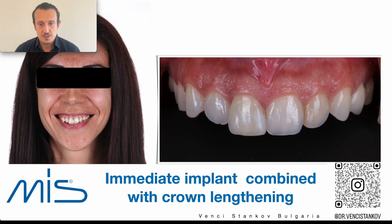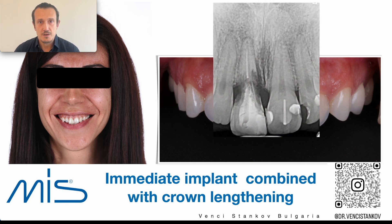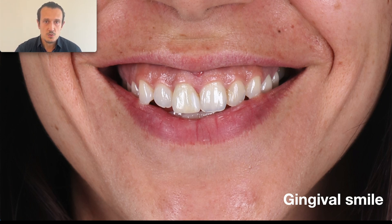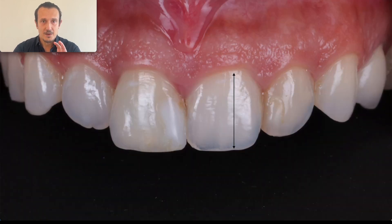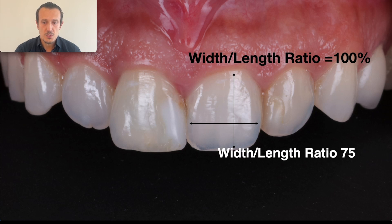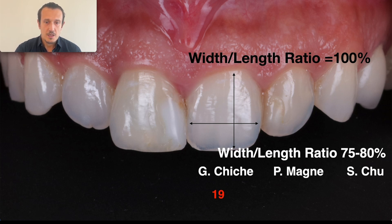We have a young patient who has a history of internal bleaching and something went wrong — she has a very severe external resorption and this is a tooth that I cannot save. The main complaints of the patient are that she has some pus coming out and inflammation from time to time in this area. Additionally, the patient has a gingival smile — she is showing a lot of gums — and during planning you can see that the width-to-crown ratio of the crown is not perfect; they are almost squarish.